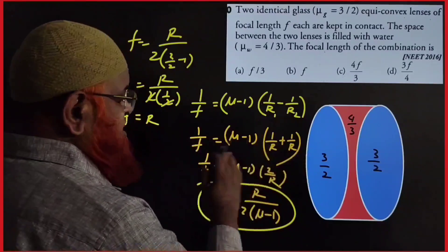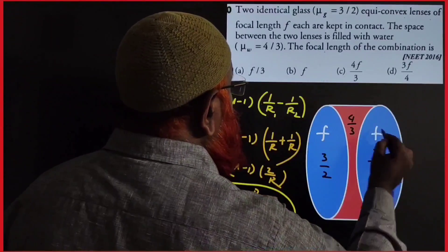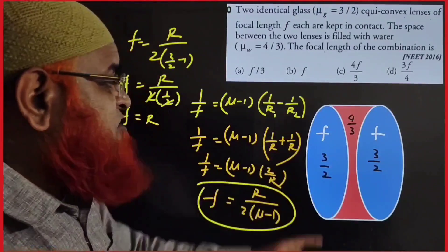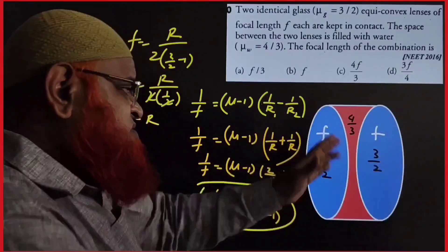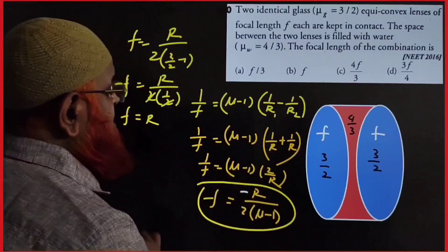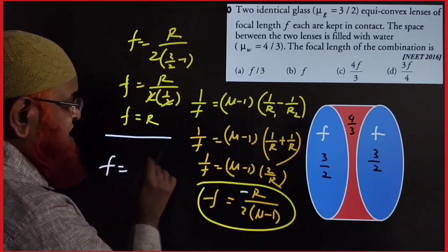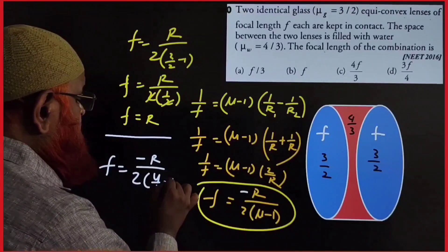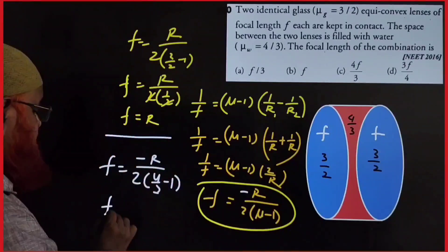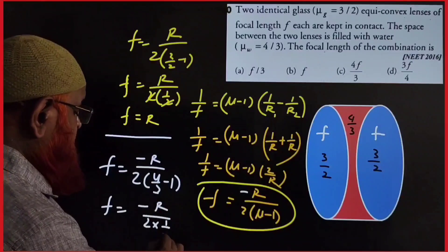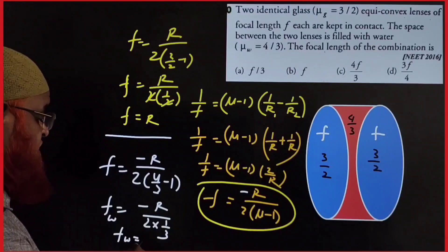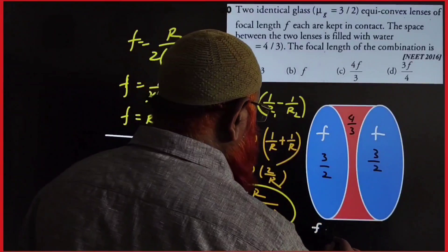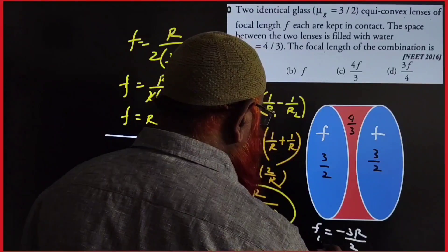Both outer lenses have the same focal length f and radius of curvature R. The middle lens is a concave liquid lens with refractive index 4/3. Applying the formula with a negative sign: focal length of middle lens = −R / (2 × (4/3 − 1)) = −R / (2 × 1/3) = −3R/2.